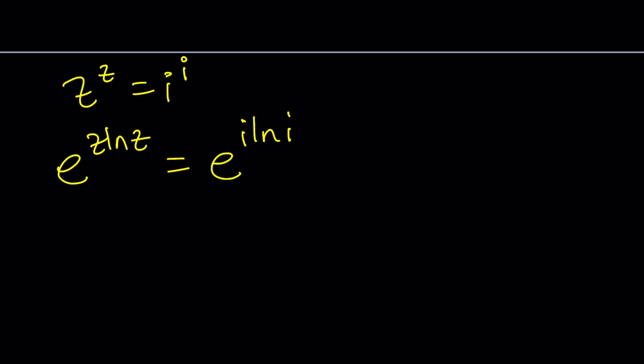We can actually get rid of the e's and write this as z ln z equals i ln i. Again, by comparing both sides, we kind of arrive at z equals i, but complex numbers are very complex, so we have to be very careful with them. Okay, we're probably missing something.